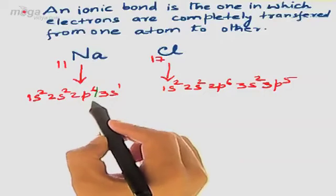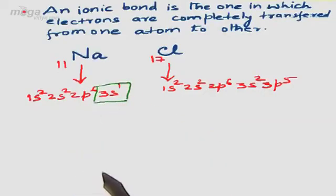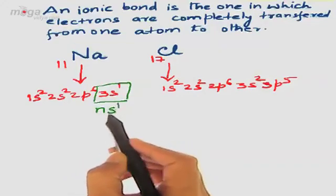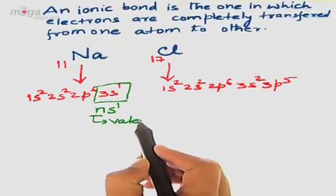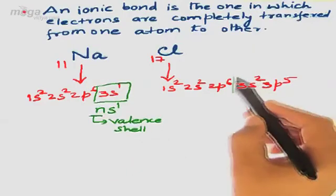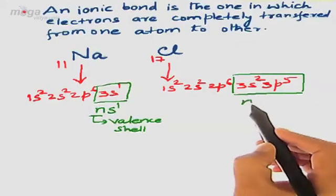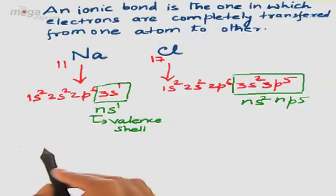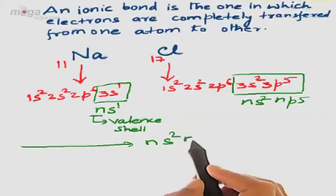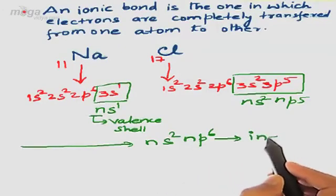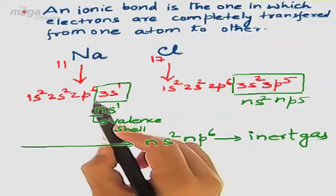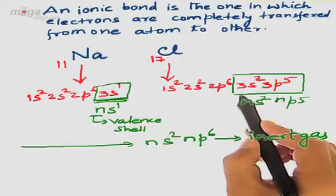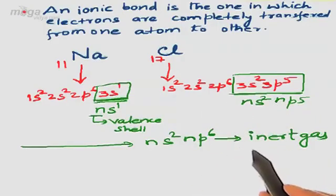In sodium, the valence shell is the third shell with configuration NS¹. For chlorine, its valence shell has 3S², 3P⁵ — that is NS², NP⁵ configuration. Every atom during bonding tries to attain NS², NP⁶ configuration — that is inert gas configuration — to attain stability. Observing the configurations of sodium and chlorine, neither of them resembles the NS², NP⁶ configuration.